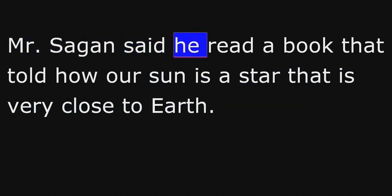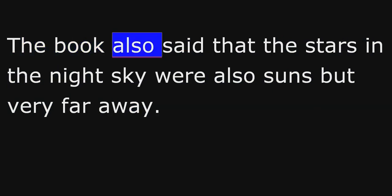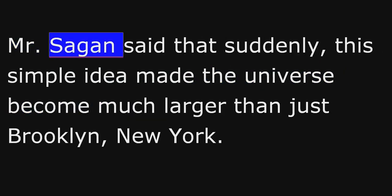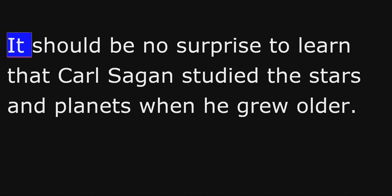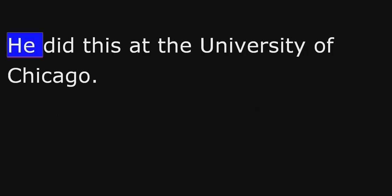He said it was a child science book about stars that helped him decide to be a scientist. Mr. Sagan said he read a book that told how our sun is a star that is very close to Earth. The book also said that the stars in the night sky were also suns but very far away. Mr. Sagan said that suddenly this simple idea made the universe become much larger than just Brooklyn, New York. It should be no surprise to learn that Carl Sagan studied the stars and planets when he grew older. He did this at the University of Chicago.